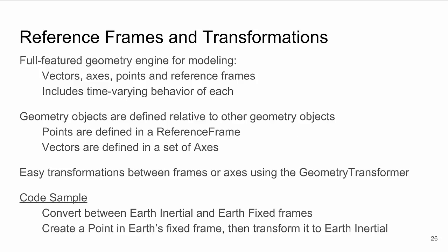Now that we've covered essentials, let's look at common patterns. For our first pattern: reference frames and transformations. SDK Components contains a full-featured geometry engine for modeling vectors, axes, points, and reference frames and how each varies over time. For example, a point might represent the position of a satellite as computed by a propagator, while a set of axes might represent the Earth-fixed axes. If you're familiar with STK Desktop, the Components Geometry Engine is modeled after STK Desktop's Vector Geometry Tool (VGT).